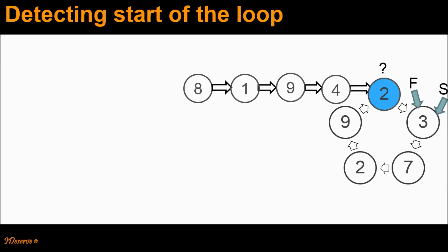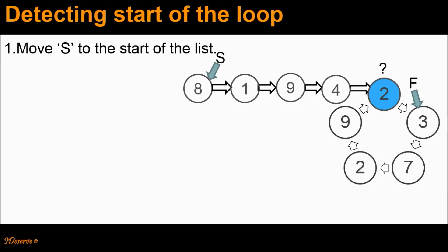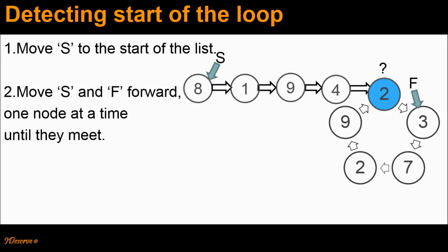The first step to detect the start of the loop is we move S to the start of the list. So S is now pointing to node 8, which is the start of the list. The second step is we move pointers S and F forward one node at a time until they meet. Note that pointer F is also moved forward one node at a time, not two nodes at a time.